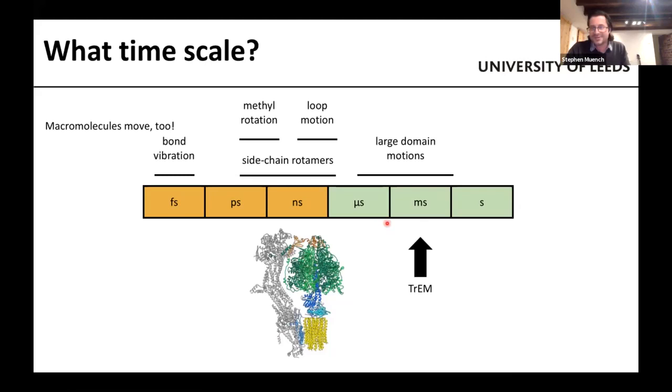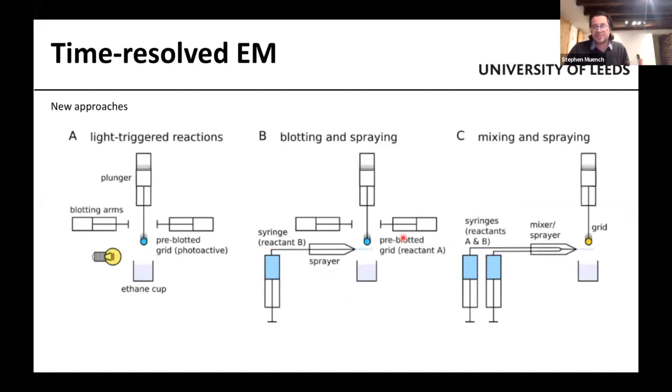But how do we go about trapping these different intermediary states that we want to study? There's three ways in which we may go around doing that. The first is that we will take our sample and put it on a conventional EM grid. We then typically blot the grid to make a very thin layer of solution, which we then plunge in liquid ethane. But on its way to liquid ethane, we can trigger the reaction with light. So we can decage a compound and start the reaction. And then when it hits the ethane, we stop the reaction and quench the reaction. And this is dependent to some extent on having a compound that could be decaged. A second approach is to pre-blot the grid to get a really nice layer of solution again, and then to spray on the substrate. And in this instance, we may spray on ATP, for example, trigger the reaction when the ATP hits the grid. And then we stop the reaction when we hit the liquid ethane.